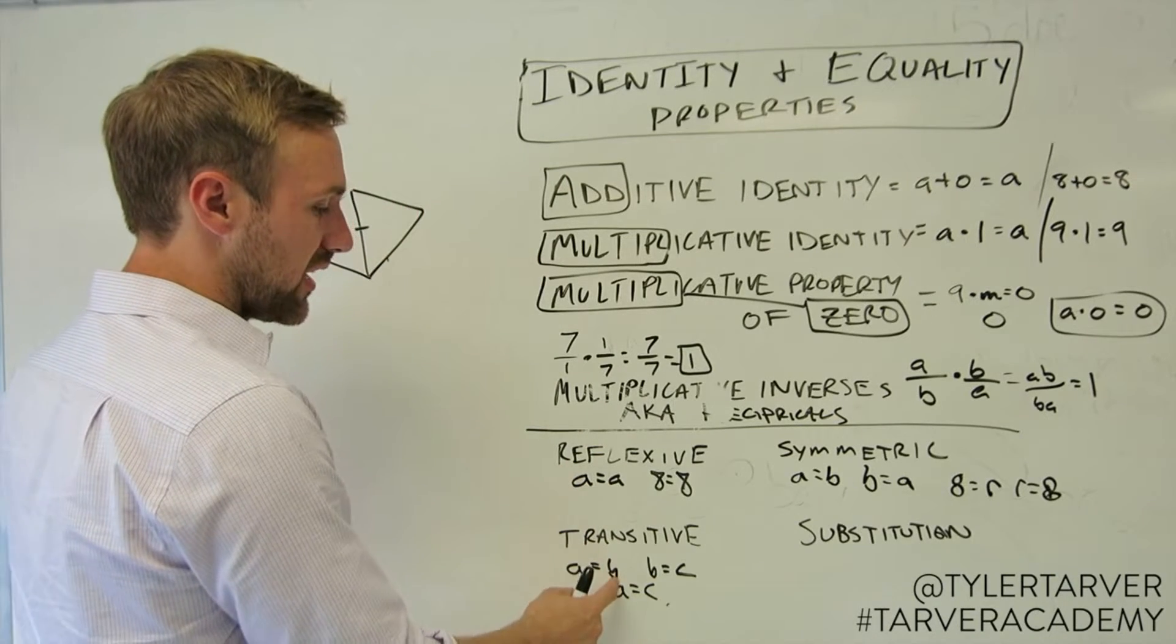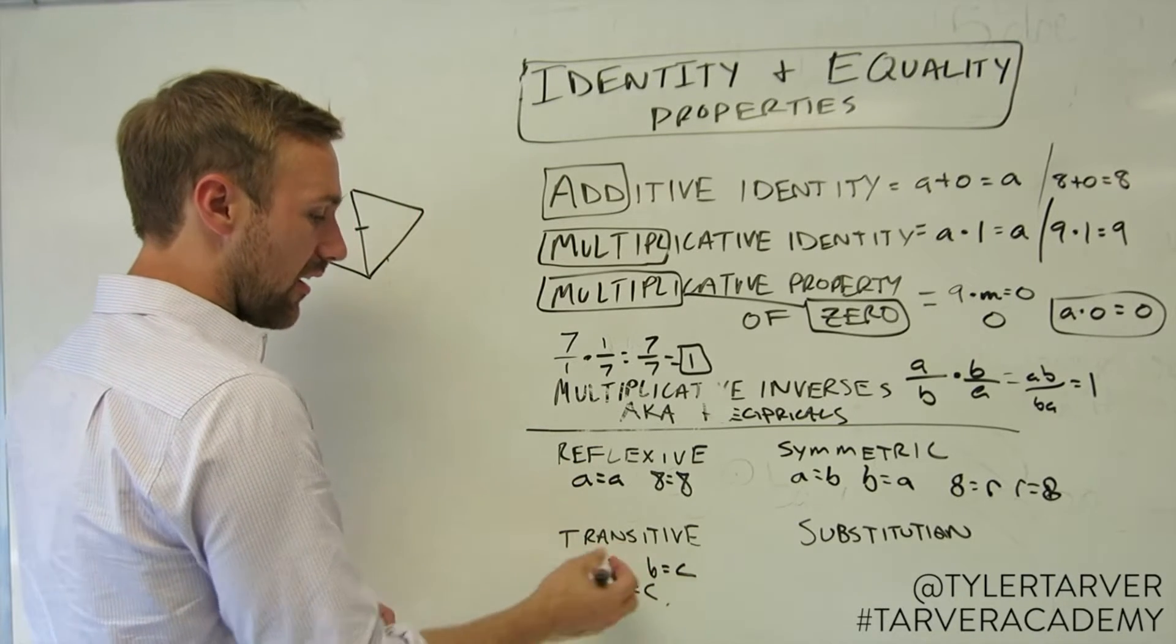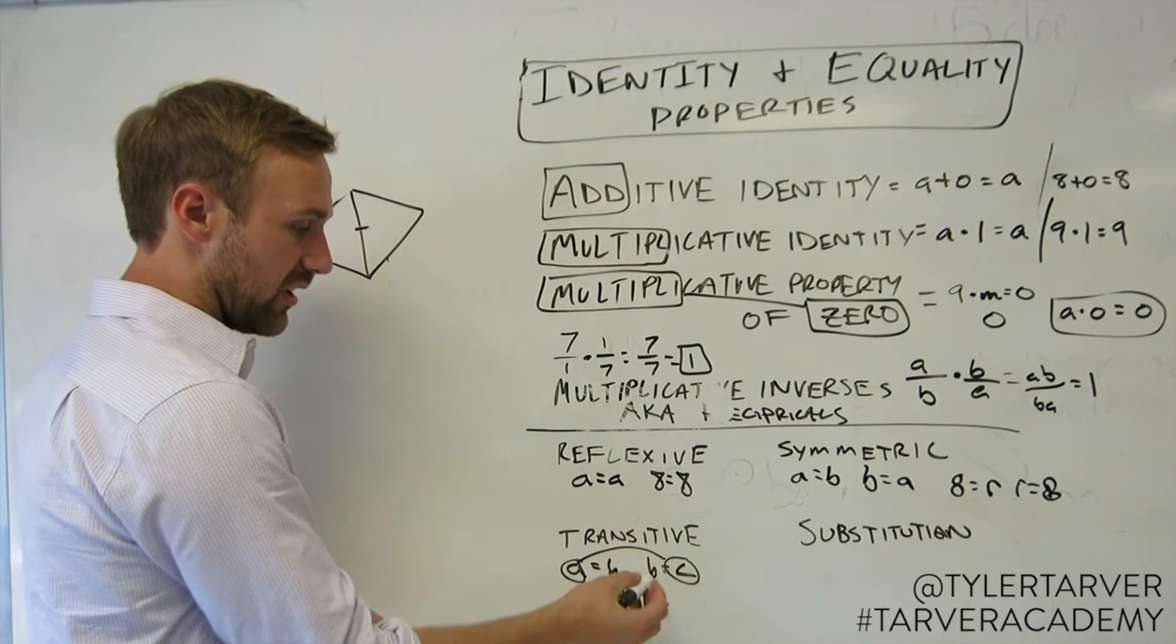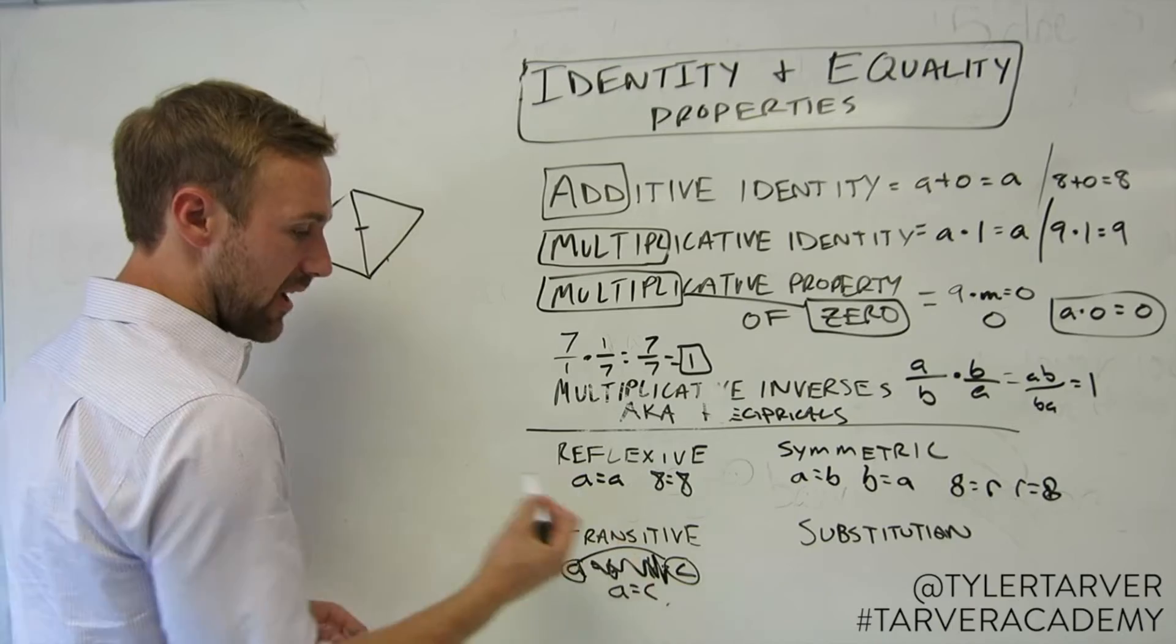Transitive property. If A equals B and B equals C, well then our A and our C are equal because B is their link. You can essentially cut out the middleman and make it equal.